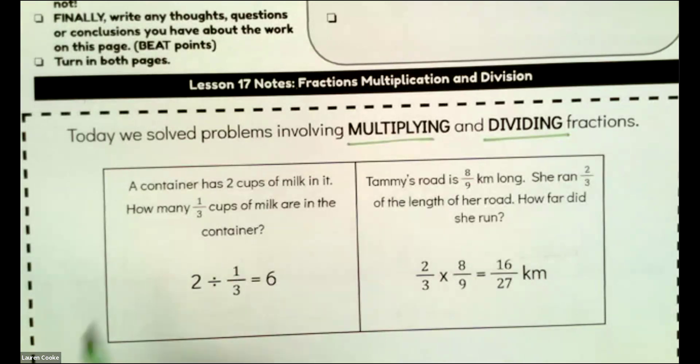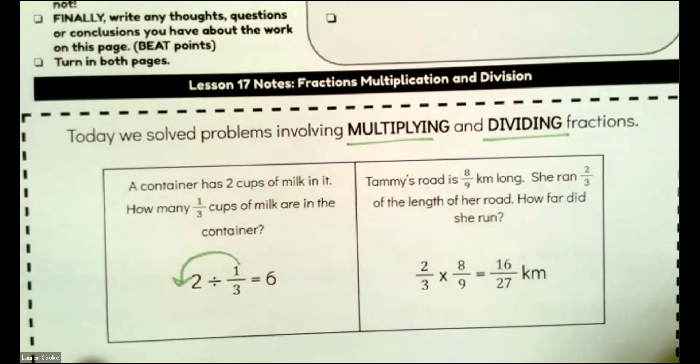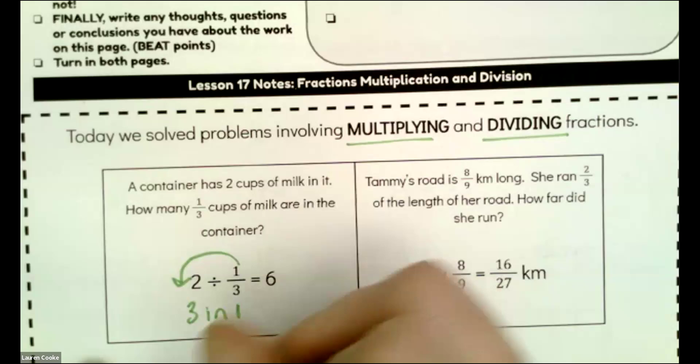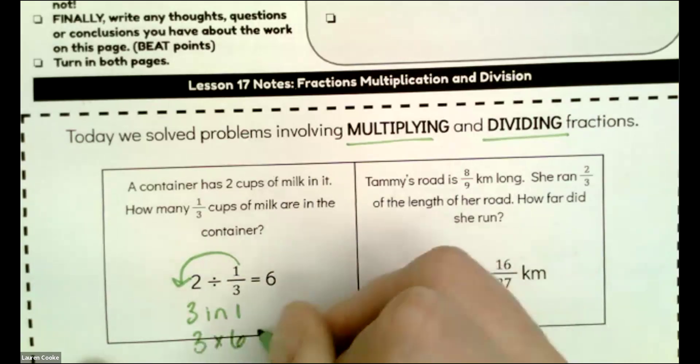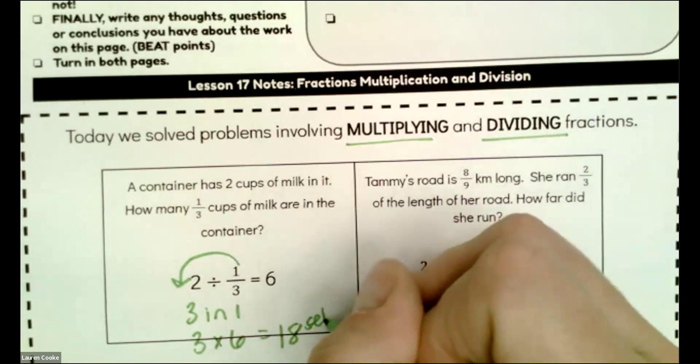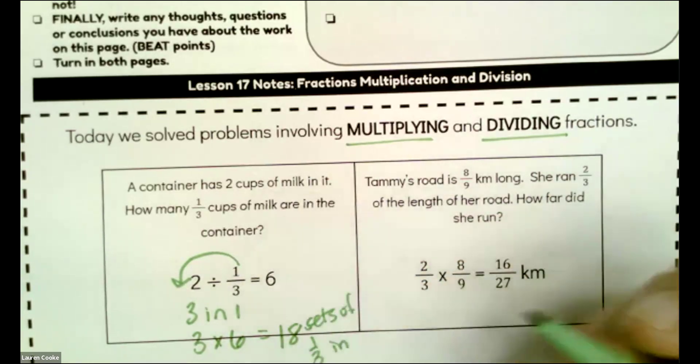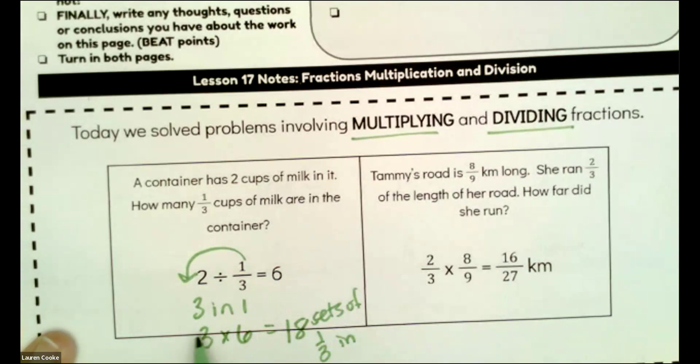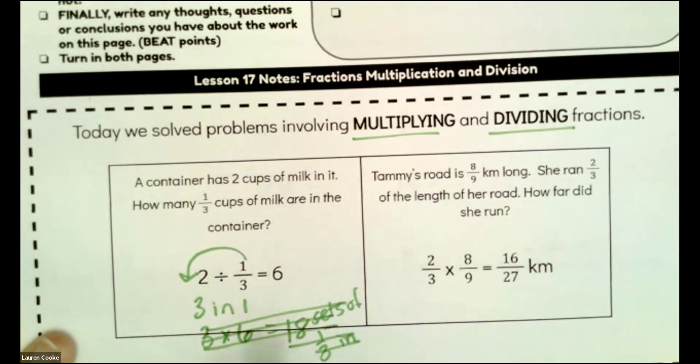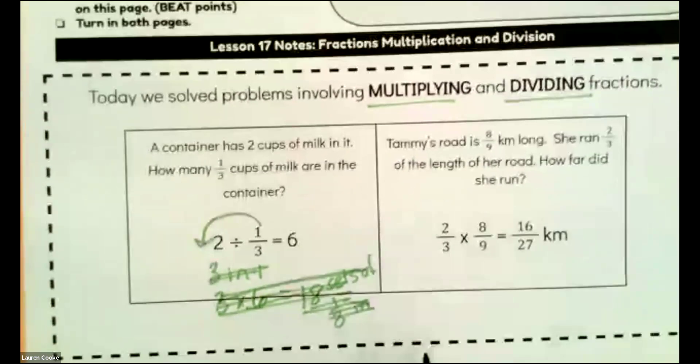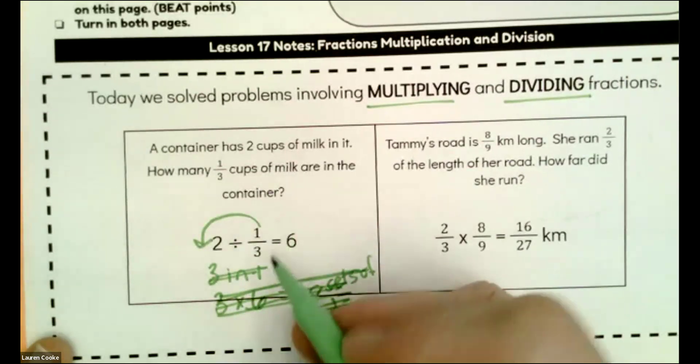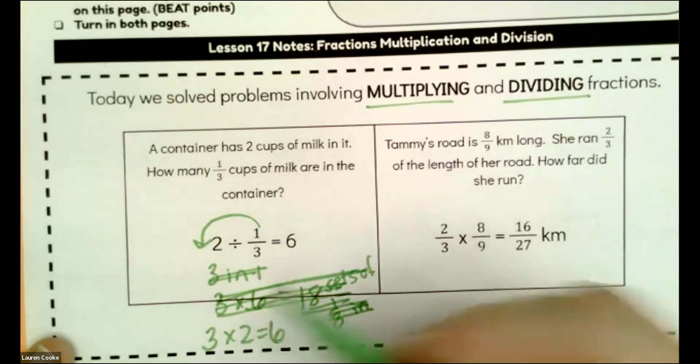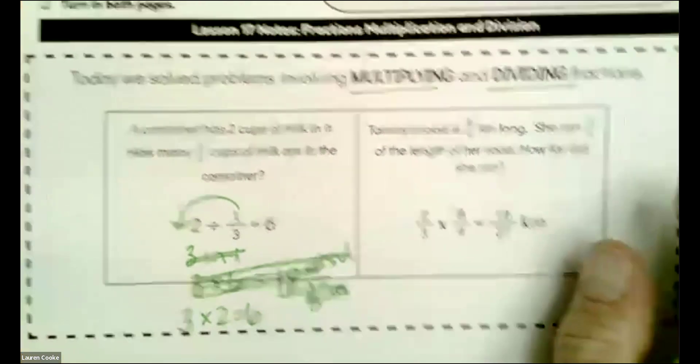A container has two cups of milk. How many one-third cups of milk are in the container? Remember, how many one-thirds in one? Three in one. So I'm going to have three times... wait. I multiplied this wrong. I'm so sorry. I mixed up everything. And that is what everyone does every once in a while. If I have one-third, how many sets of one-third in one? Three times two. That's going to be six sets of one-third in two.